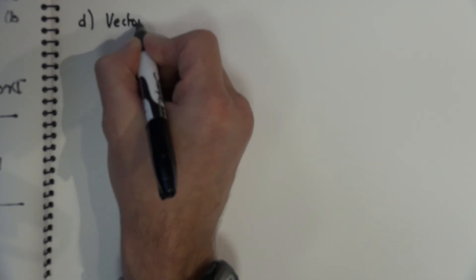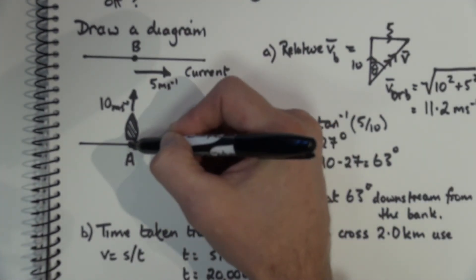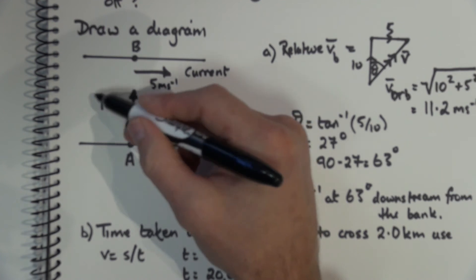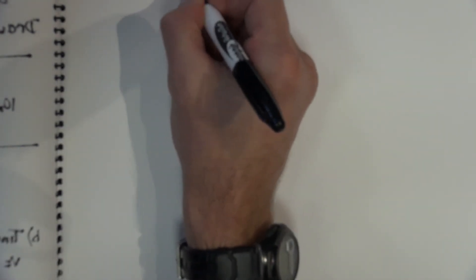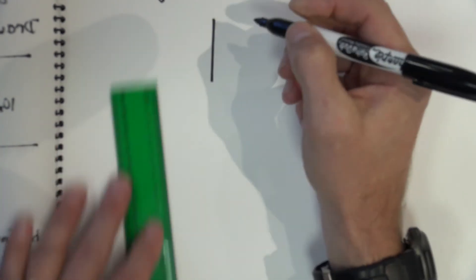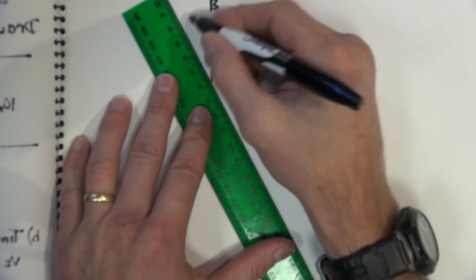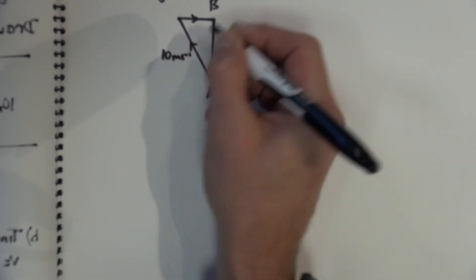For part D I need to find a vector that will take the boat from point A to point B directly across the river. To do this the boat will have to aim upstream. I know it travels at 10 metres per second and the current is 5 metres per second downstream, so I need to produce a vector triangle made up of the current and the boat's velocity at 10 metres per second, with the 10 m/s as the hypotenuse and the top line representing the current.